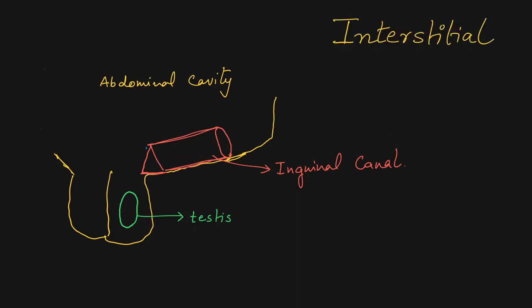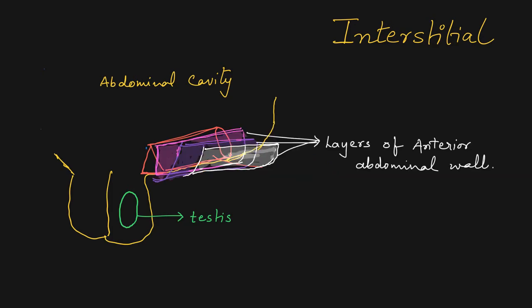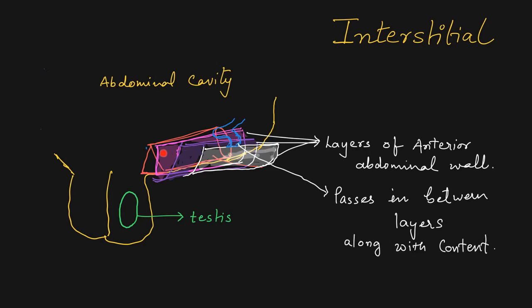If the processus vaginalis remains patent and passes in between layers of the anterior abdominal wall — either between the skin and external oblique muscle, or between external oblique and internal oblique, or through the fascia transversalis — the content also passes along with it and that is called the interstitial type of hernia.